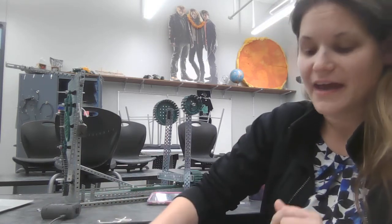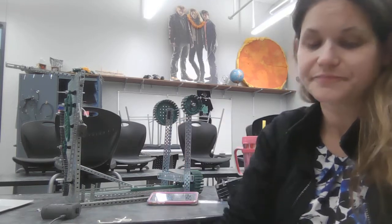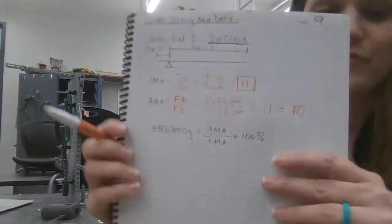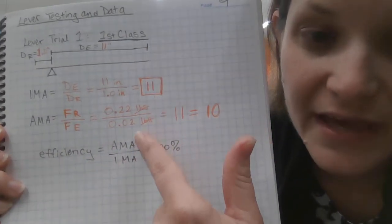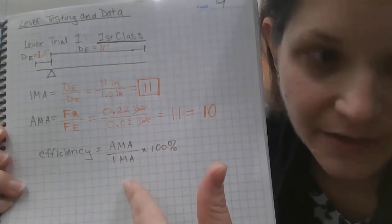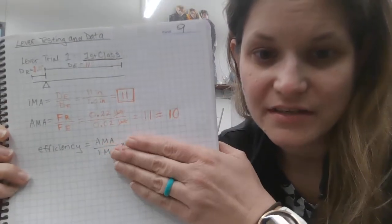So one thing that I haven't talked to you guys all about is something called efficiency. That's this next little formula that's down here. Do you see how it says efficiency is equal to AMA divided by IMA, then times a hundred percent because it's a percentage.